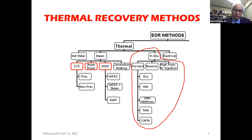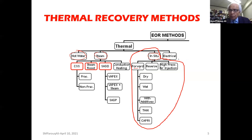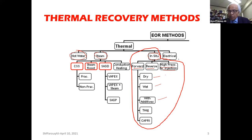Here are the different thermal recovery methods. I have circled out the in-situ combustion-based processes. This is in-situ combustion; this is steam; this is hot water, which is a variation of steam. We also have electrical heating — I've worked on several electrical heating projects and consider it mostly experimental, though we have done maybe a dozen field projects. Getting back to in-situ combustion, there are three variations: forward combustion, reverse combustion, and high-pressure air injection. Forward combustion can be dry or wet. THAI — toe-to-heel air injection — and CAPRI are special variations of in-situ combustion.